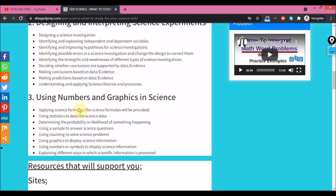Then the third is using numbers and graphics in science. As I said earlier on, you'll be given some stats to describe. You are going to be finding probability, likelihood of something happening. And I also said applying science formulas - the formulas will be provided, so all you need to do is substitute, which you should have learned in math. So you just substitute the values and you get your answer.